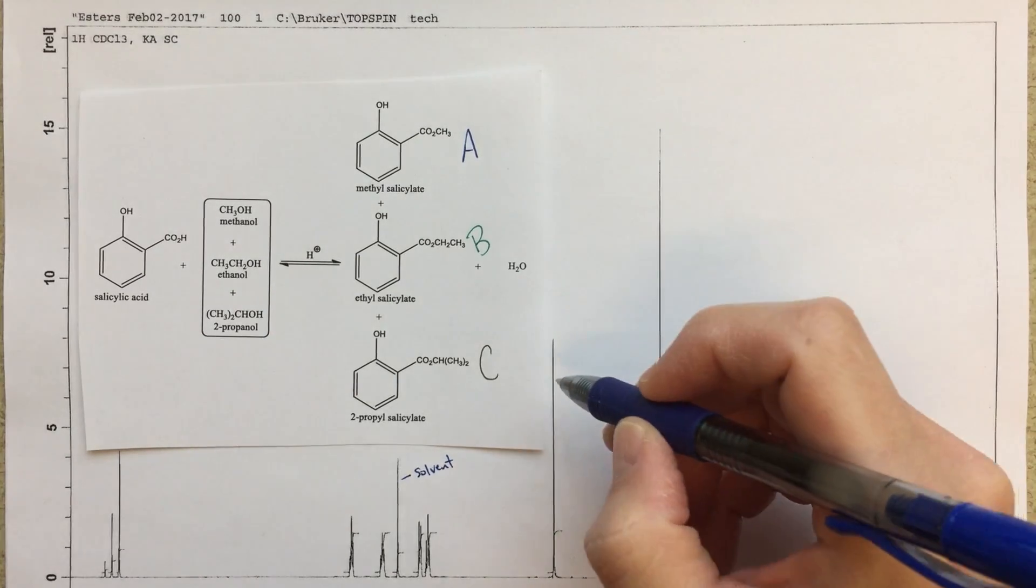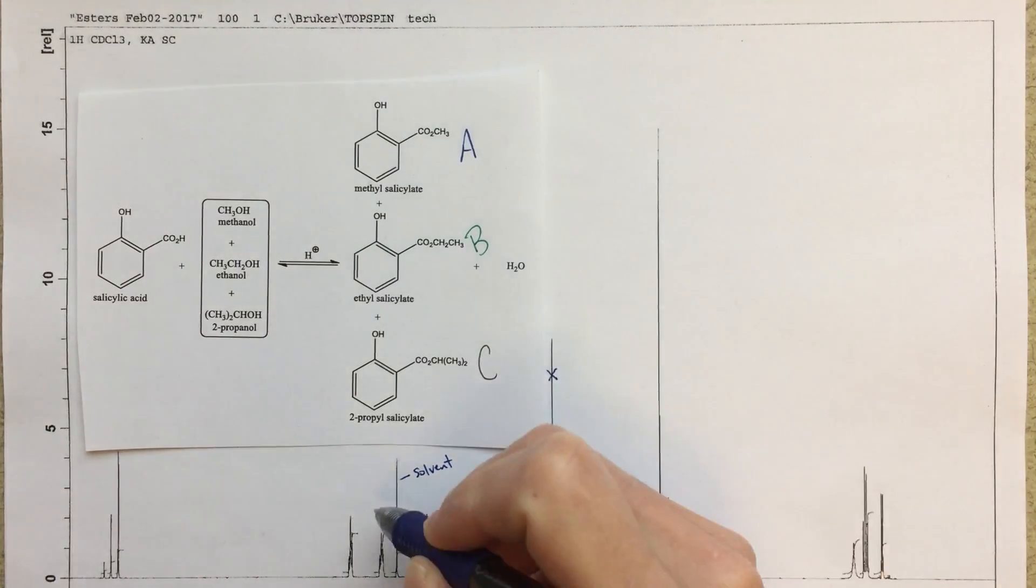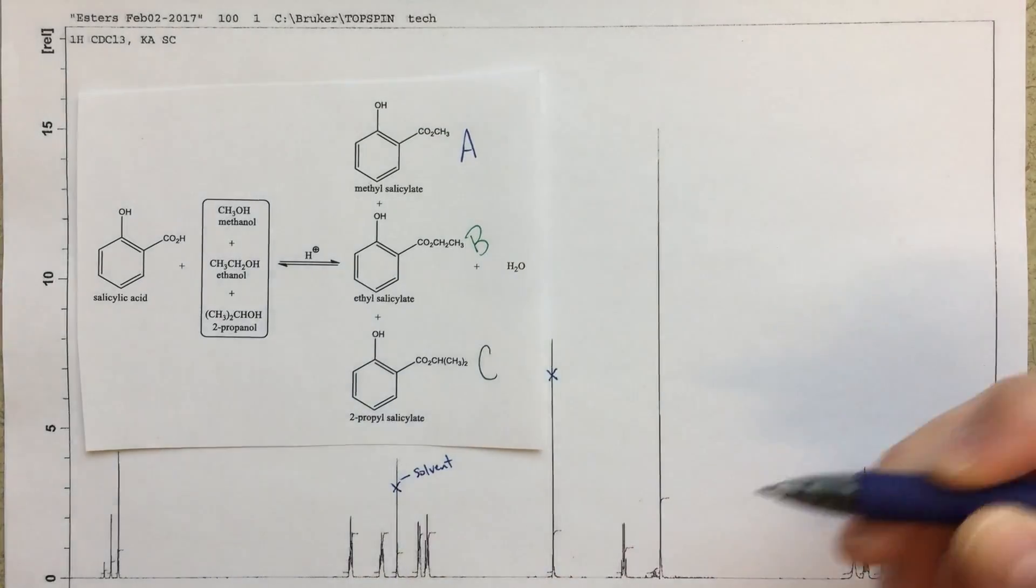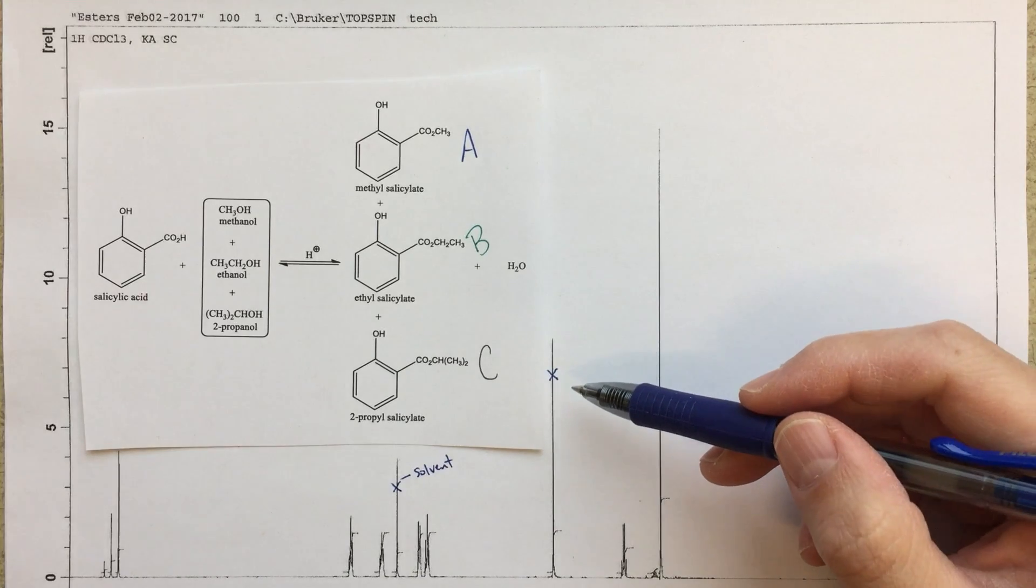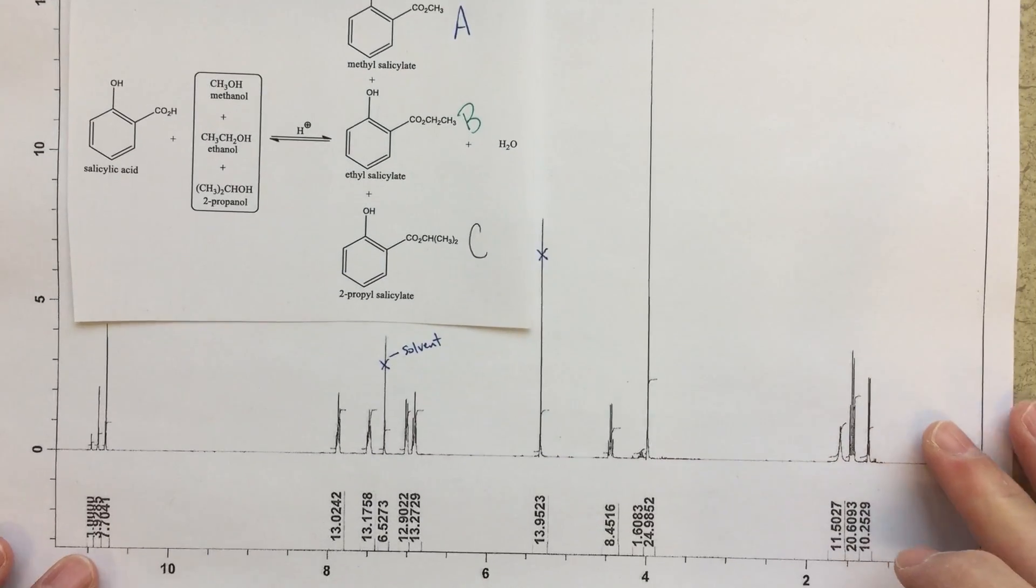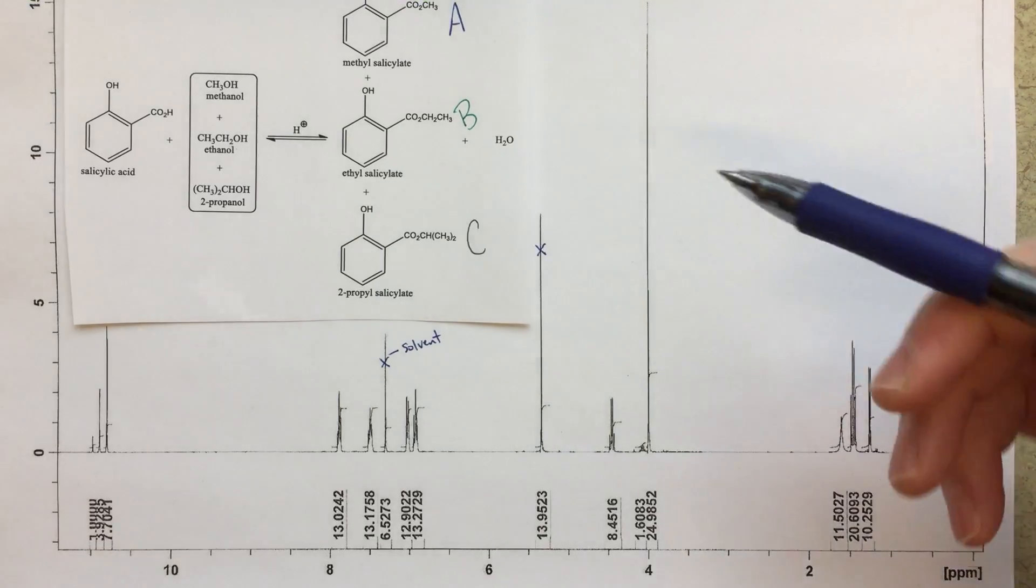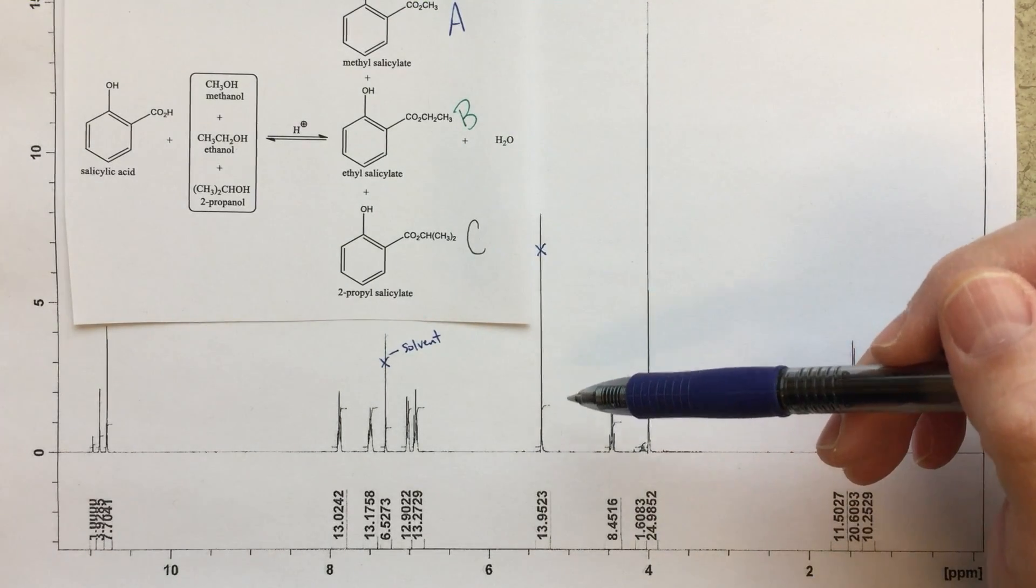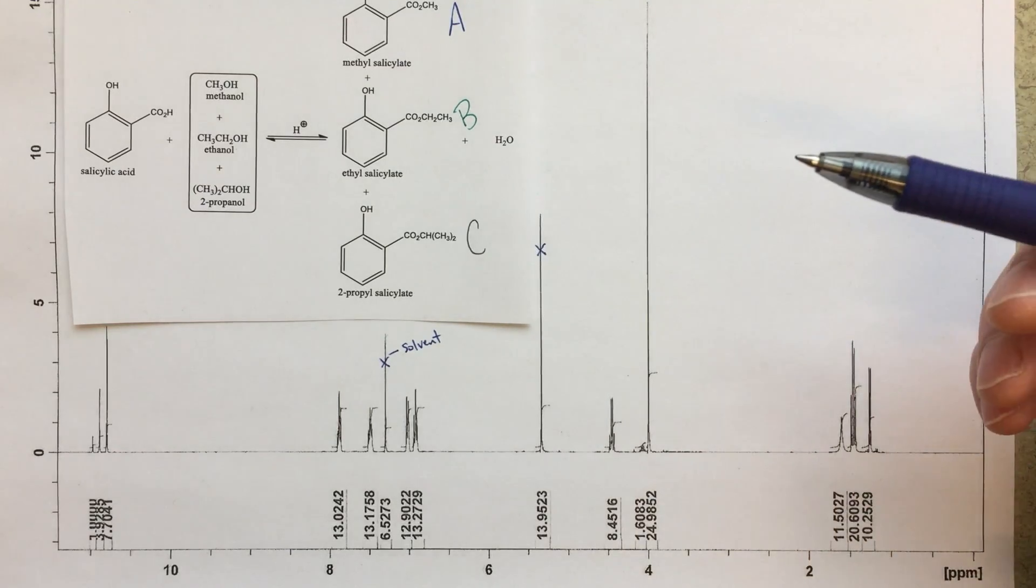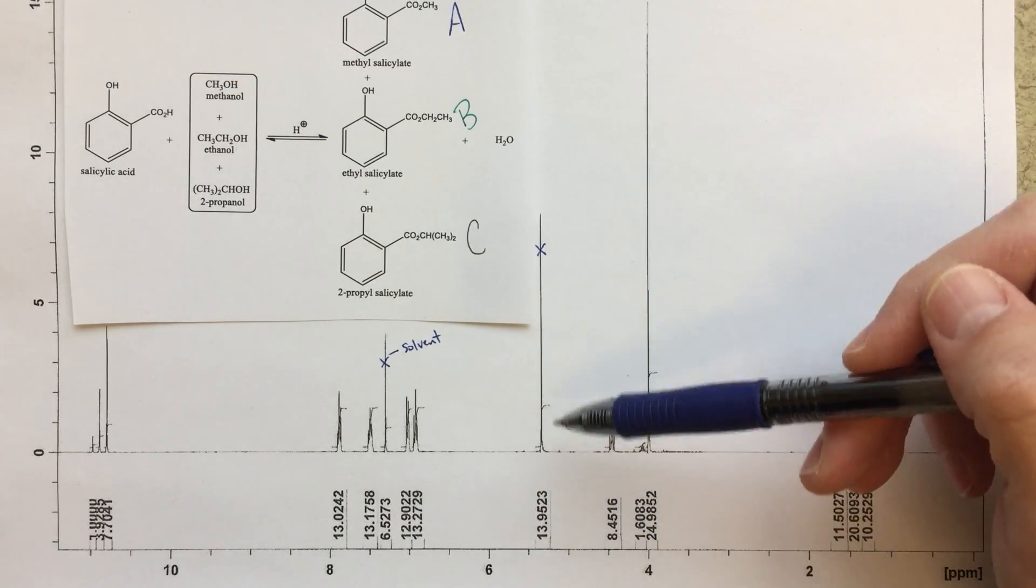I was also told that this peak here, we can ignore this peak. So let's put X's through those, and we don't need to pay attention to them. And I was told that this is DCM, but this isn't exactly where I'd expect DCM to come in chloroform. It should be more around 7.